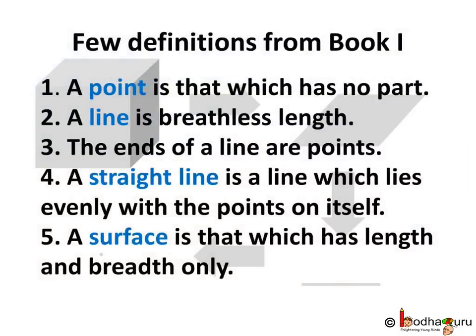Few definitions from book 1 are: A point is that which has no part. A line is breadthless length. The ends of a line are points. A straight line is a line which lies evenly with the points on itself. And a surface is that which has length and breadth only.